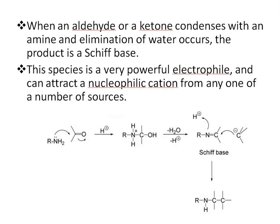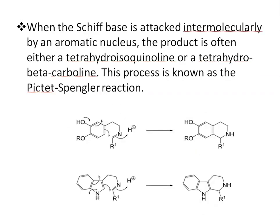When an aldehyde or a ketone condenses with an amine, an elimination of water occurs. Just look at this reaction. The product which is formed is called a Schiff base. This species is a very powerful electrophile and can attract a nucleophilic cation from any one of a number of sources. When the Schiff base is attacked intermolecularly by an aromatic nucleus, the product is often either a tetrahydroisoquinoline or a tetrahydro-beta-carboline. This process is known as the Pictet-Spengler reaction.